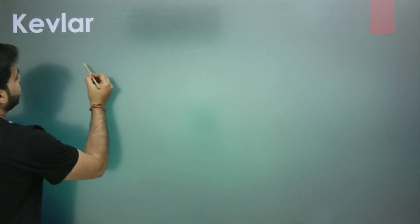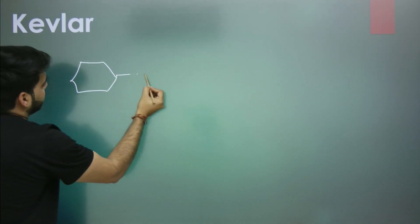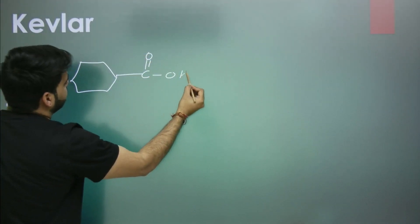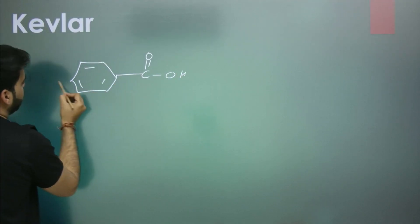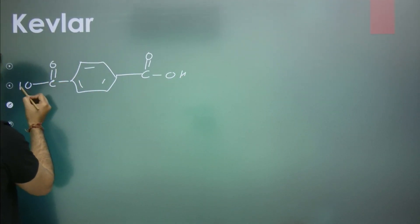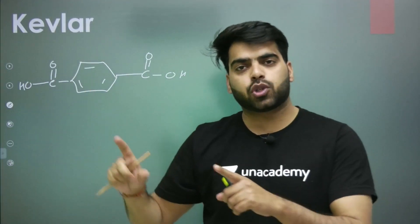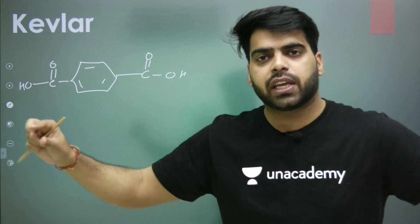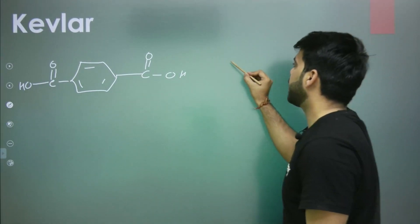What will it be made from? Here the acid used has a benzene ring — benzene-1,4-dioic acid is the acid we are using here. Similarly, the amine here is also a diamine so that a long chain can form, and that diamine also contains an aromatic ring.